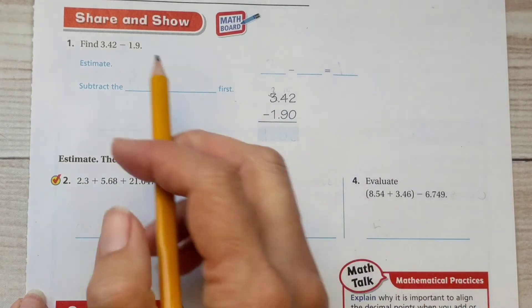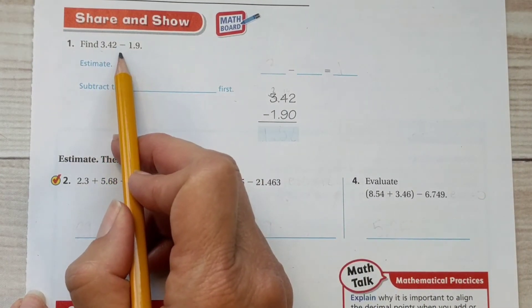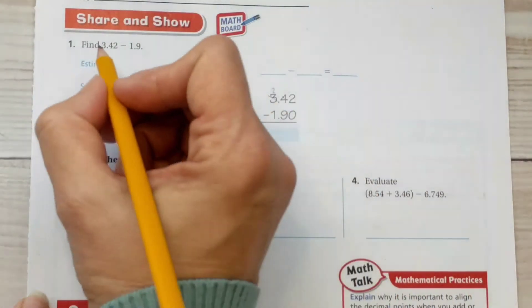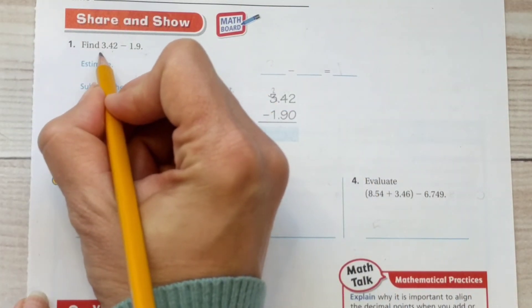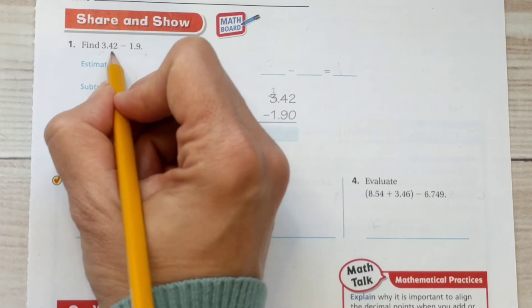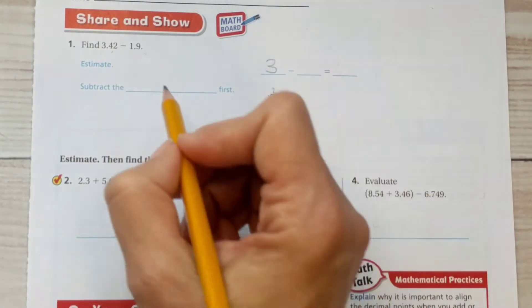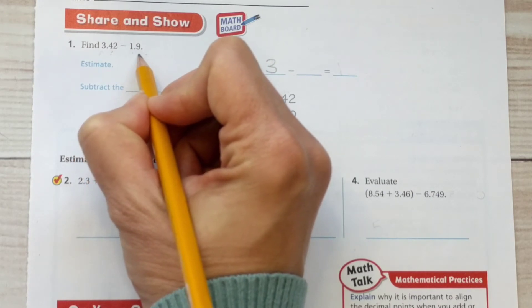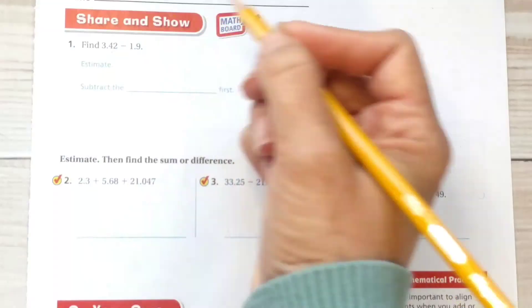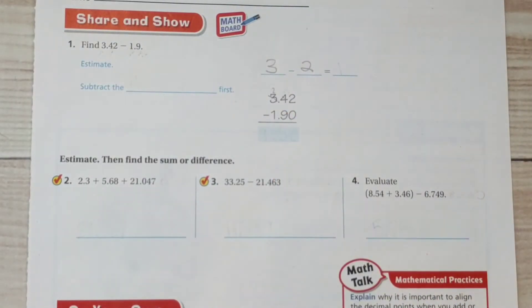Let's take a look at share and show. Find 3.42 minus 1.9. So first we're going to estimate. We want to round it to the nearest whole number. Look at the 4. Does that affect the 3? Well, remember it's 5 or more that rounds it up. So this 4 does not round up the 3. So we're going to start with a 3. Look at the whole number. Look at the digit behind it. The 9 is greater than 5 and therefore does round up that 1. So 1 rounded up 1 digit is 2. So 3 take away 2 is 1. Our estimate is 1.